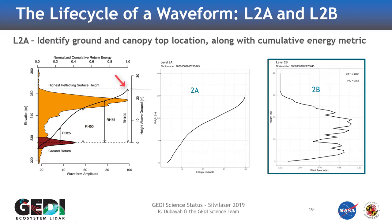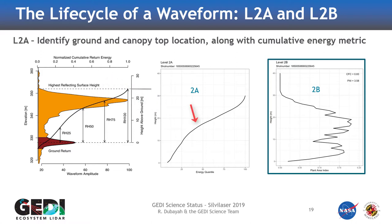And then once we do that, we can calculate the cumulative waveform profile. So then you take it over to the 2A realm and calculate the canopy metrics. This waveform here is the 1B waveform, and then this is the 2A cumulative profile.